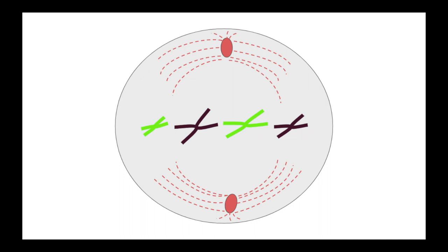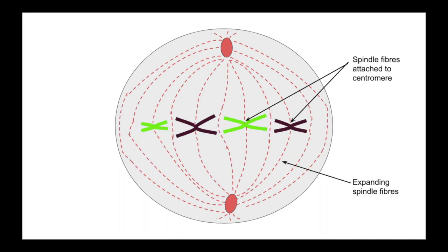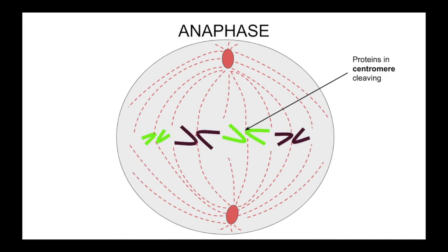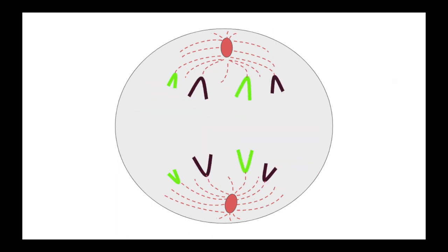During metaphase, the chromosomes line up across the metaphase plate and attach to spindle fibres by their centromere. In anaphase, the proteins in the centromere cleave and the sister chromatids separate through microtubules such as kinetochore fibres, pulling the now daughter chromosomes to opposite poles.